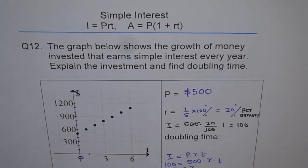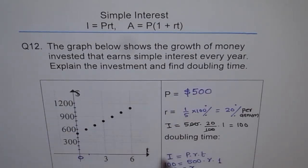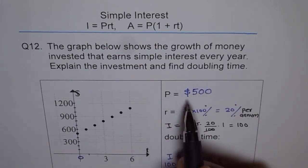So we can say that a sum of $500 has been invested where simple interest is being earned at the rate of 20 percent per annum. Now let's find the doubling time.